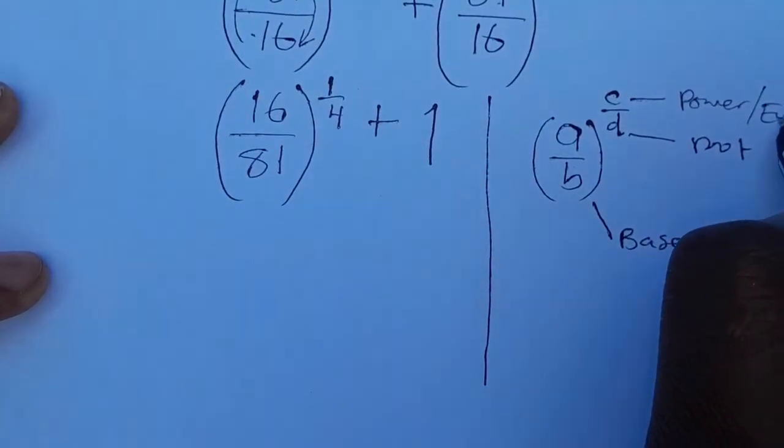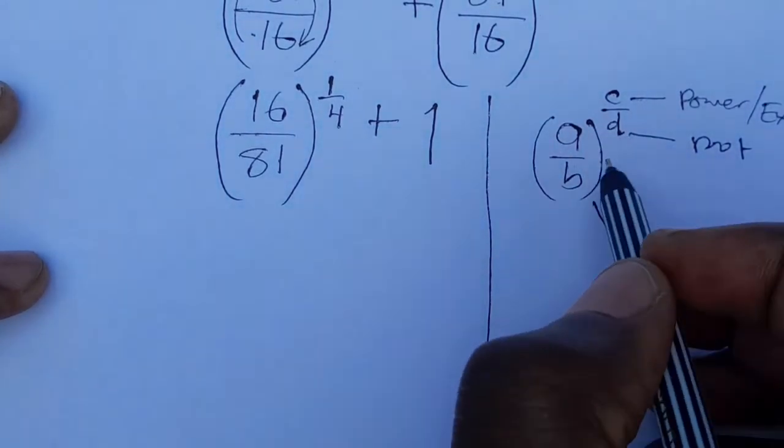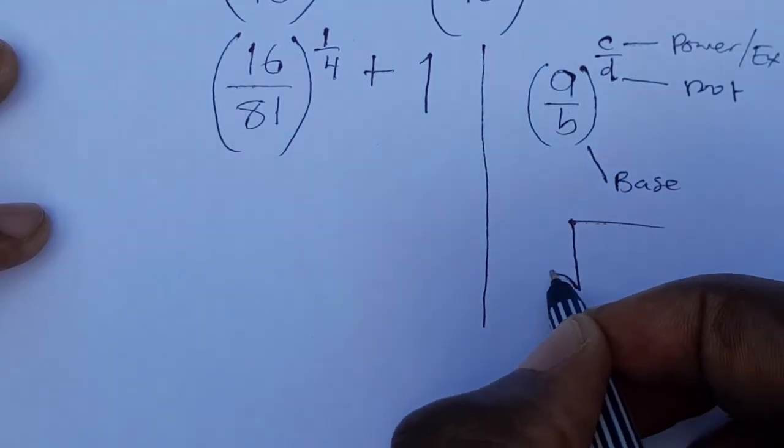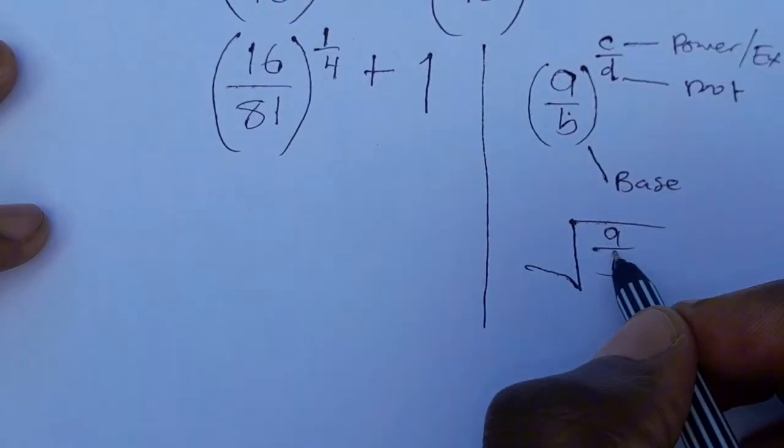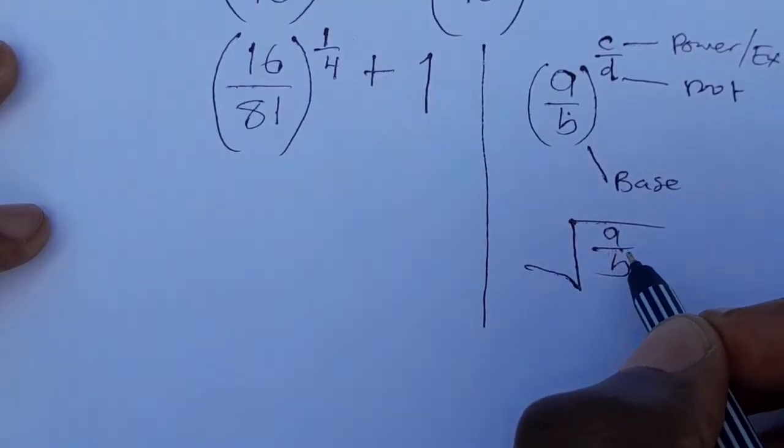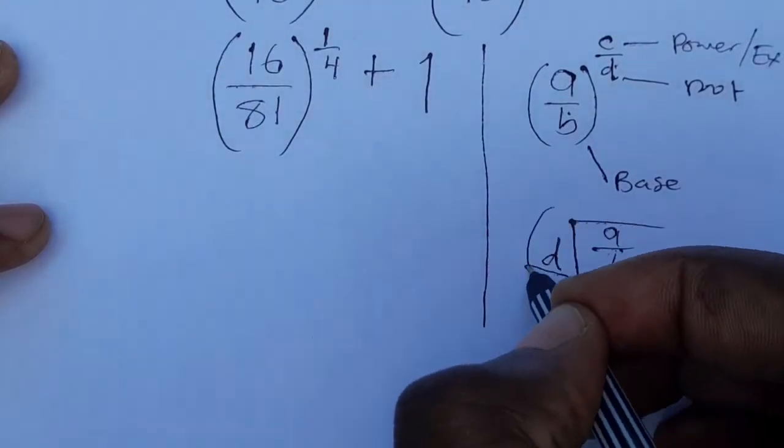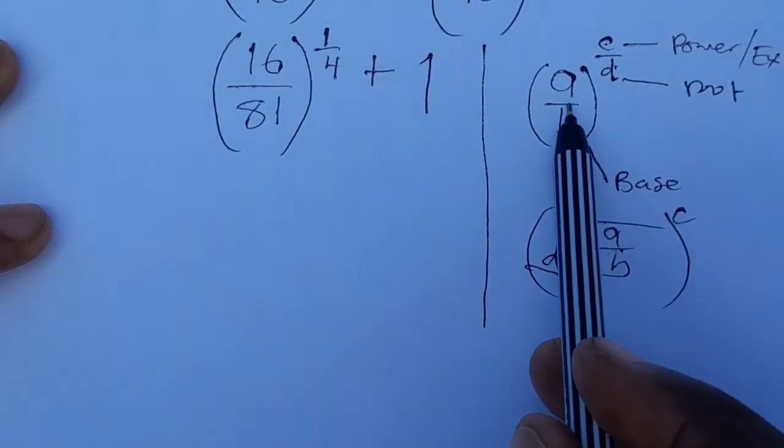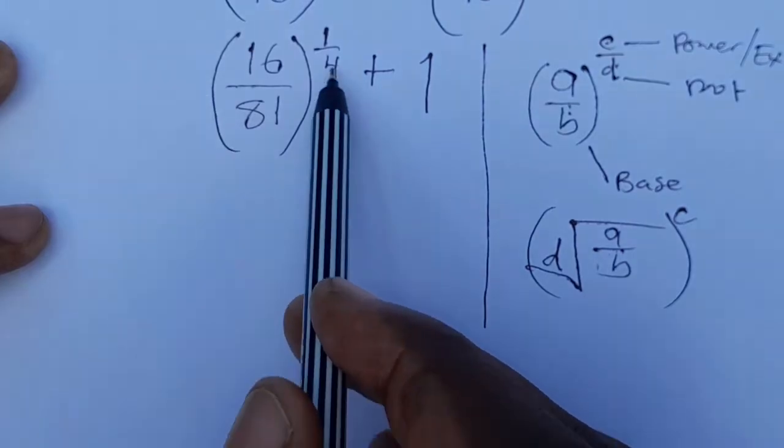Then this number here is the power or the exponent or the index. So the whole of this thing can be written in this form: you have a over b, the base, goes inside the root, then here you put the d, d will be here, and then everything is being raised to the power c. So this and this are just the same.